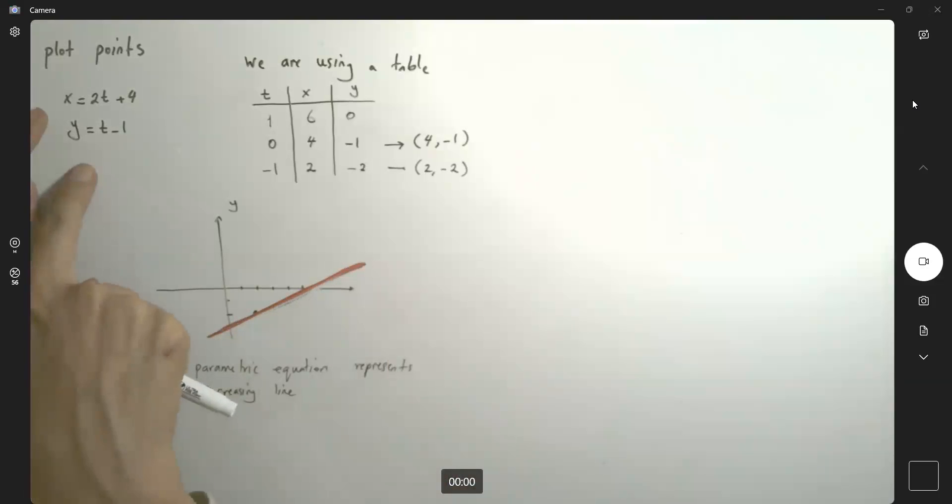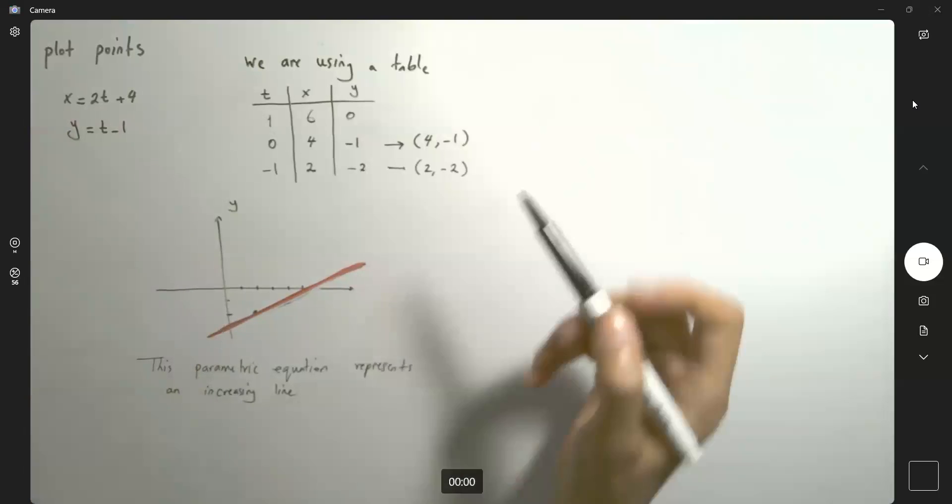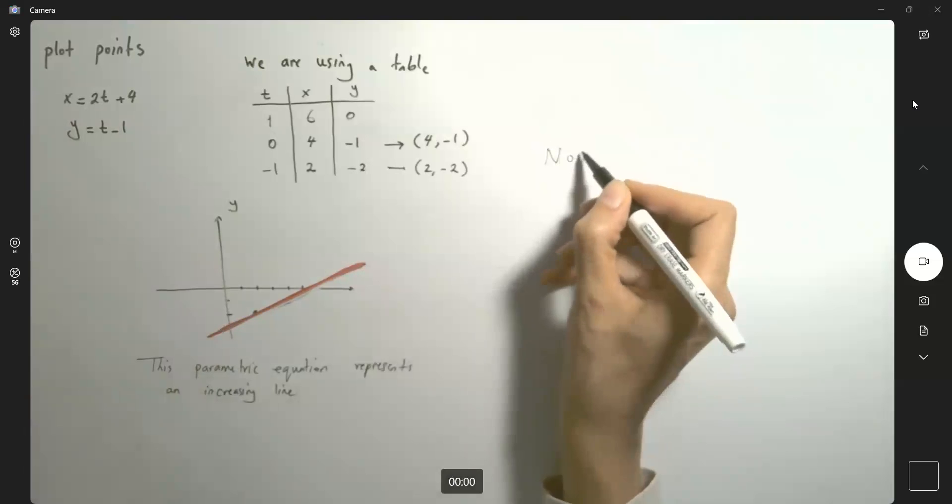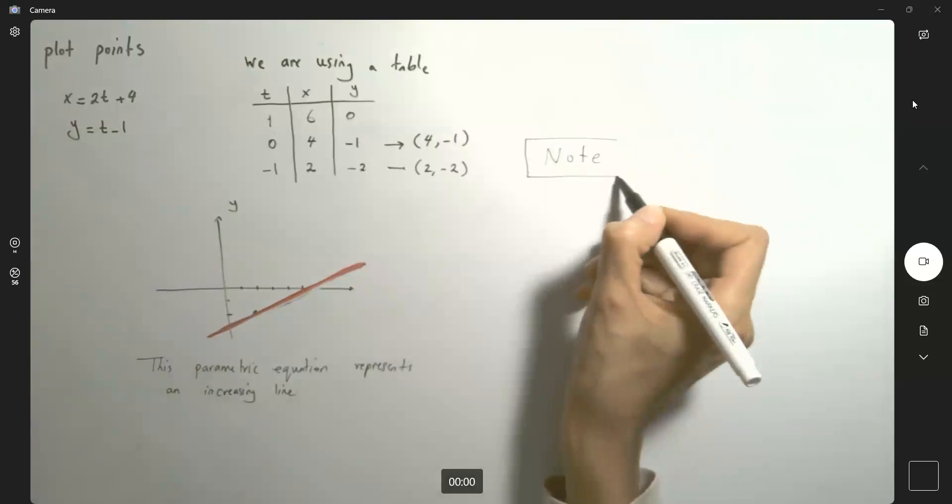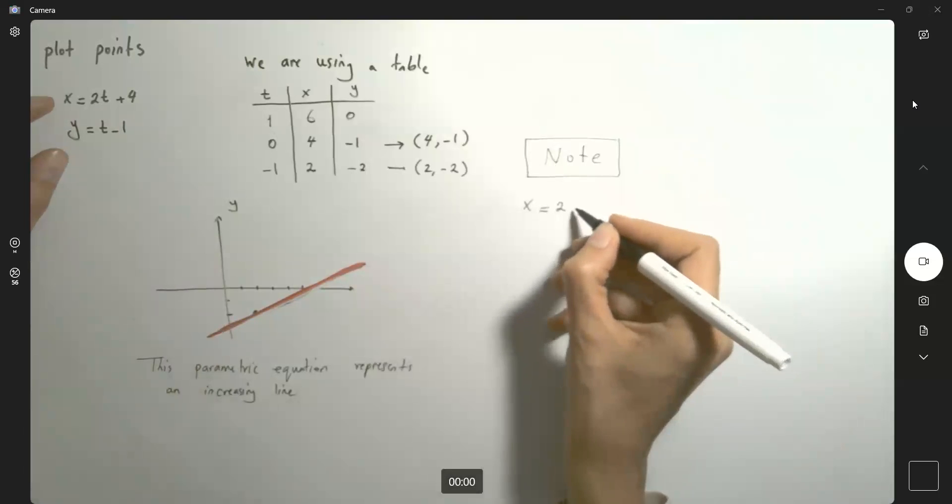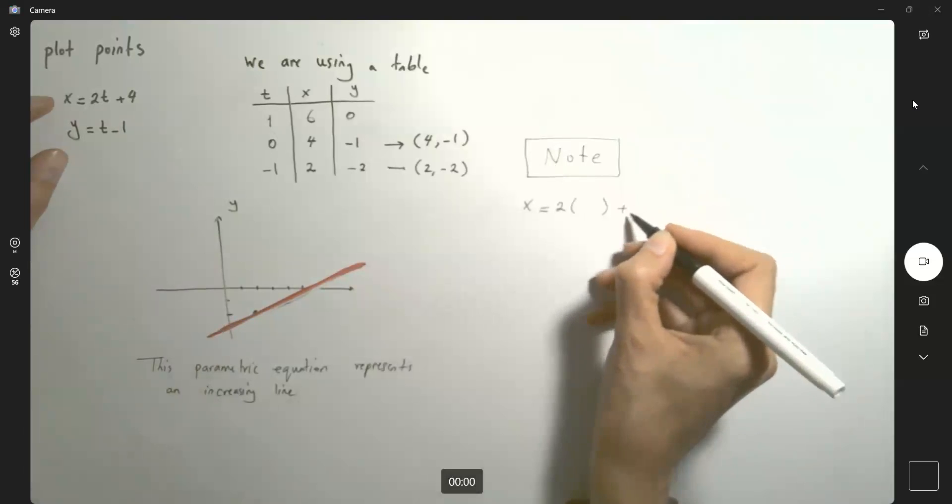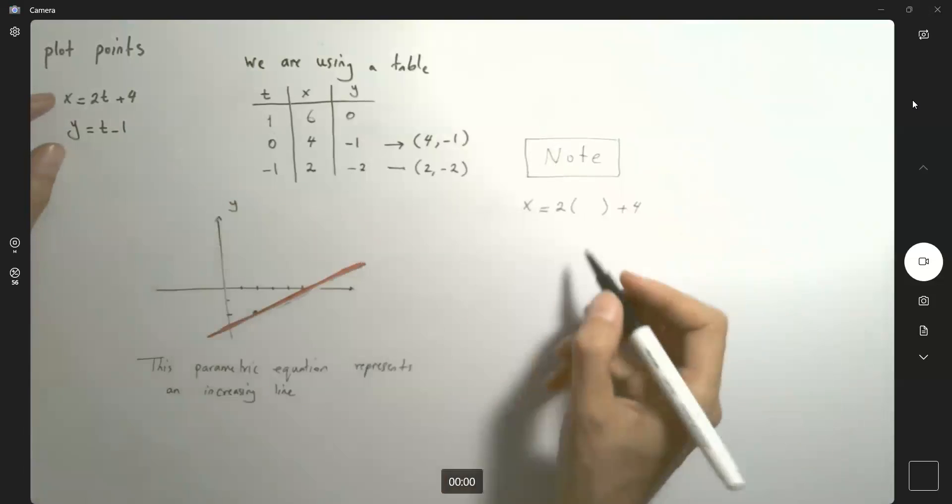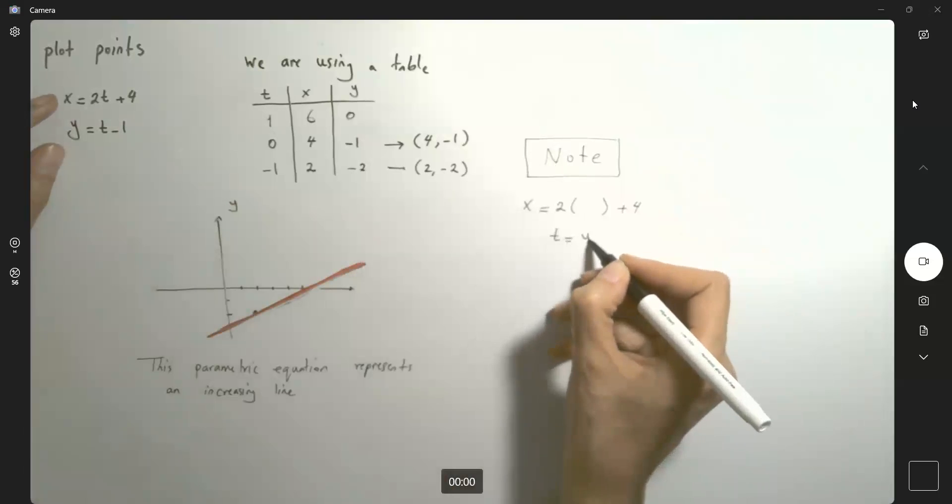What else you could do in another step: you could take t to be y plus 1 and substitute that over there. So note that, here's an important note for you. You can take x, which is 2 times t plus 4.